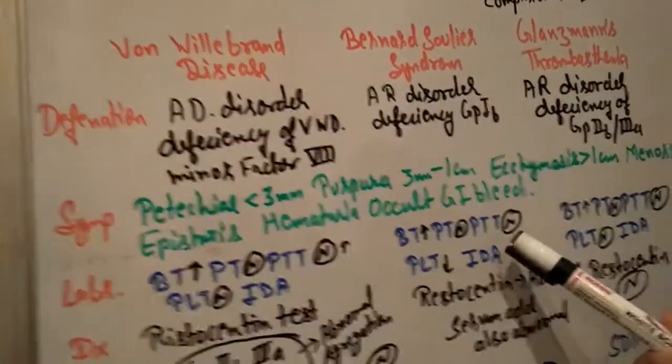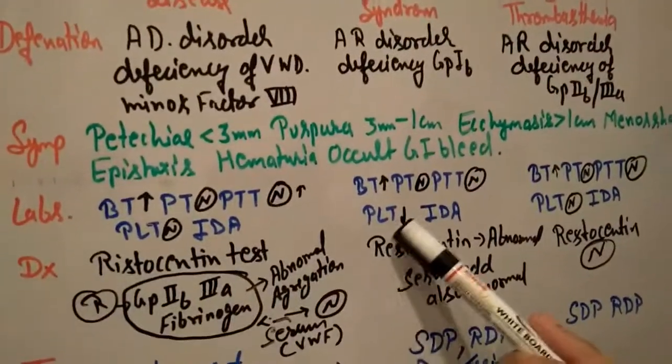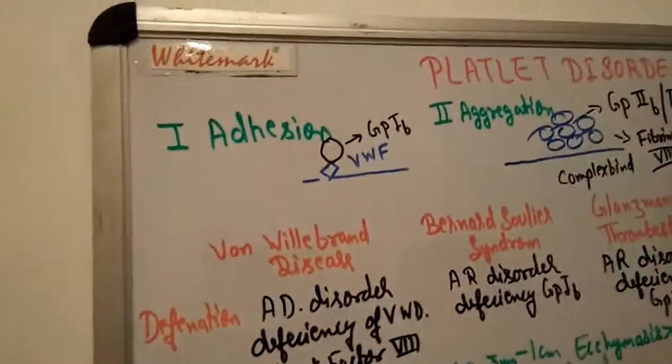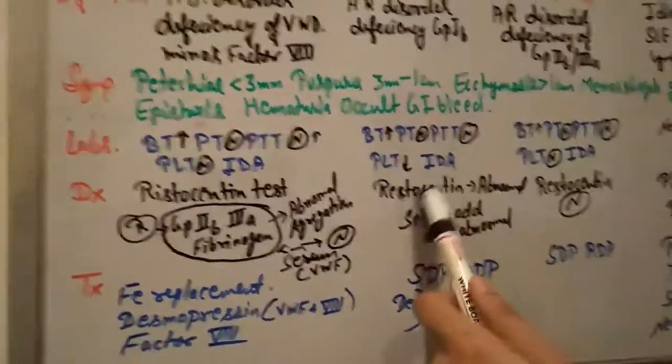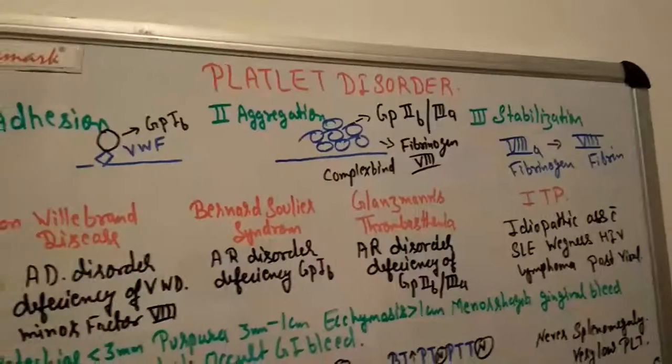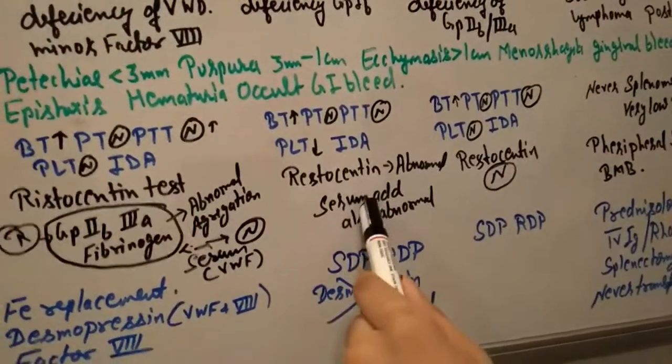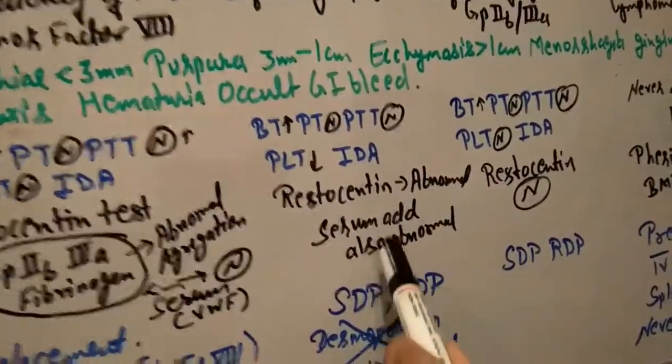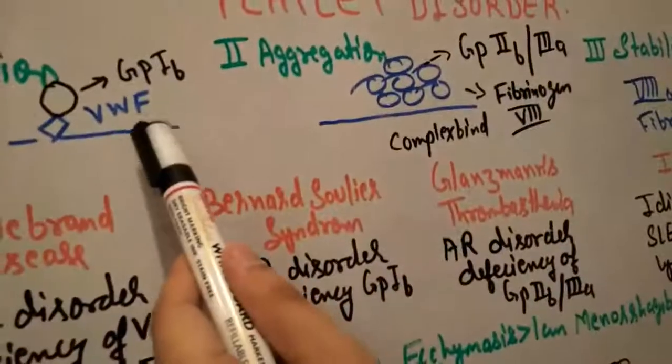PT and PTT are normal because there's no factor deficiency, but there is platelet deficiency with glycoprotein 1B deficient. The ristocetin test shows no aggregation occurs, so it's abnormal. If we add serum, that is also abnormal because it contains von Willebrand factor, but here von Willebrand factor is adequate. The problem is glycoprotein 1B deficiency.